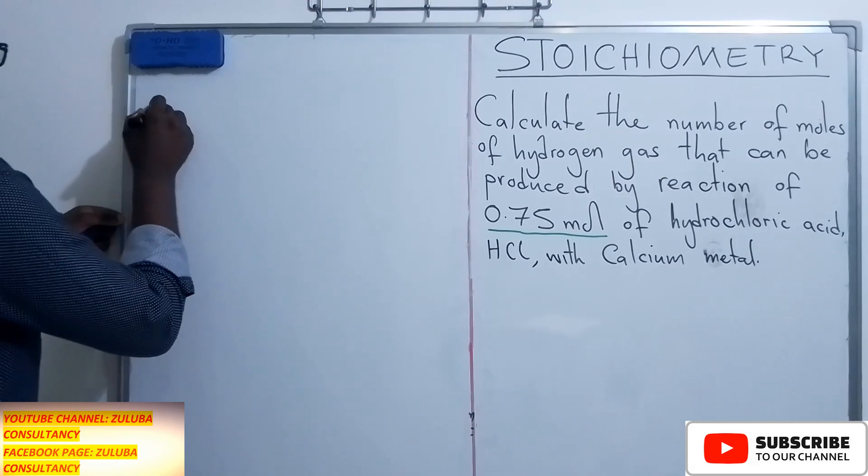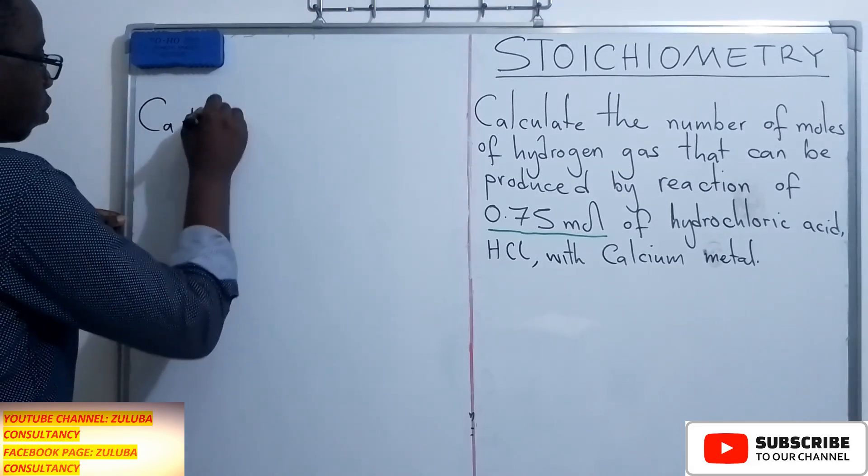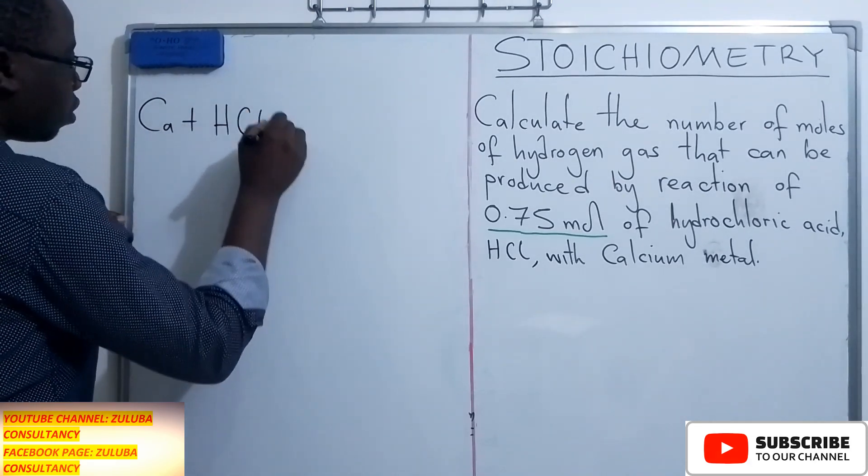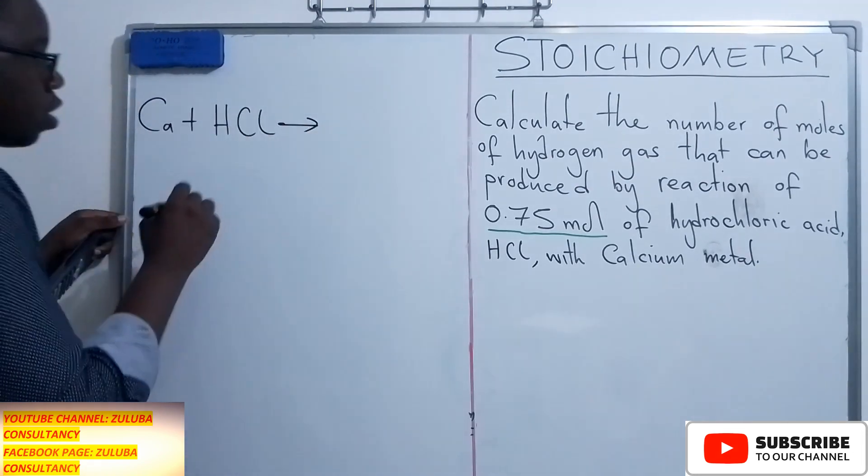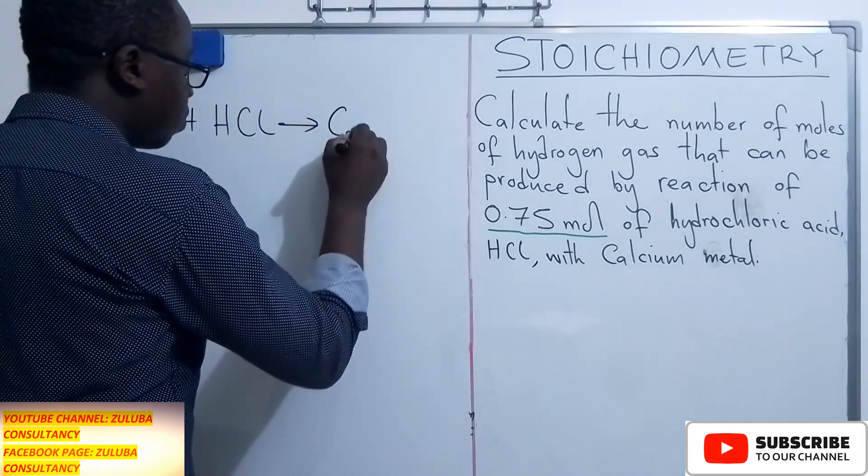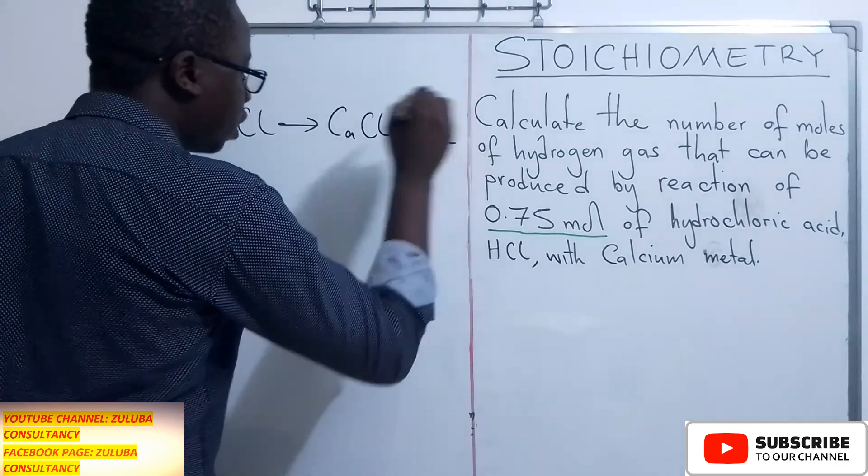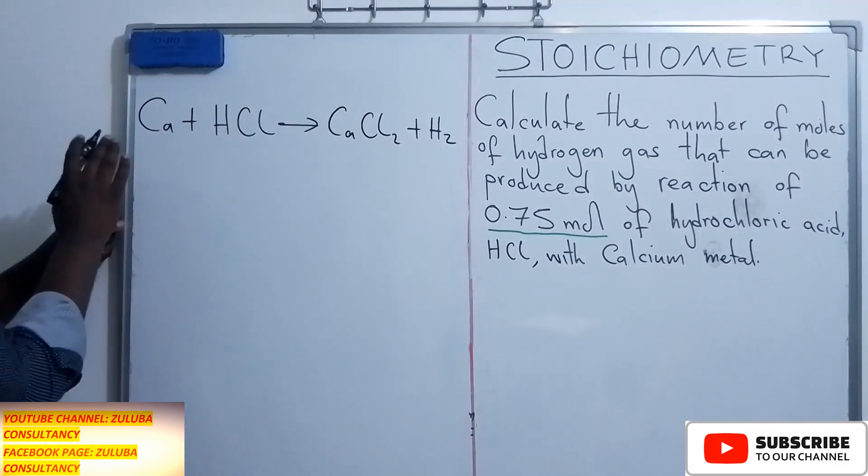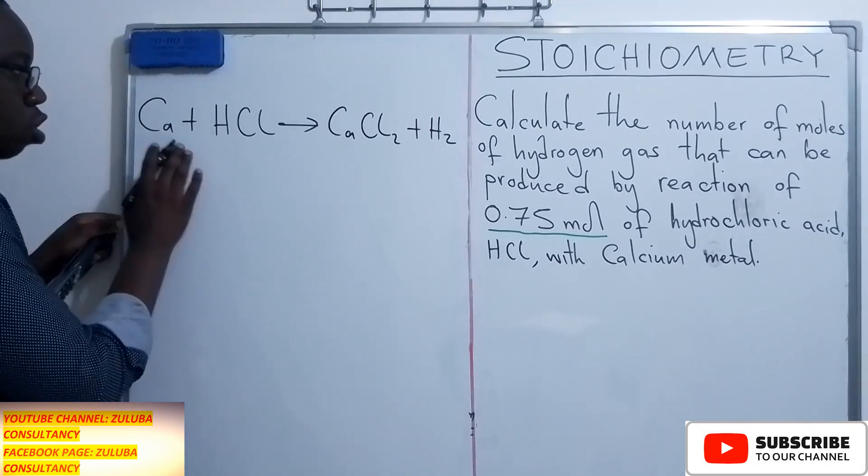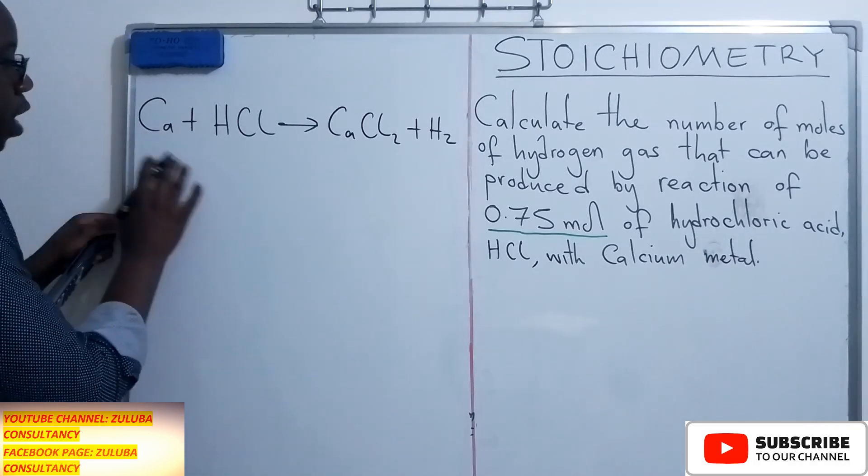So we have calcium, it is reacting with hydrochloric acid, then it is giving us calcium chloride and hydrogen gas. Now when you look at this equation, it is not balanced, so we need to balance it.